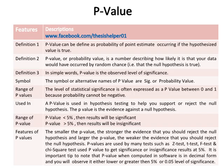P-values are used by many tests such as the z-test, t-test, f-test, and chi-square test, all of which use the p-value to get significant or insignificant results at 5%. It is important to note that the p-value when computed in software is in decimal form, and you will observe it as either lower or greater than the 5% or 0.05 level of significance.